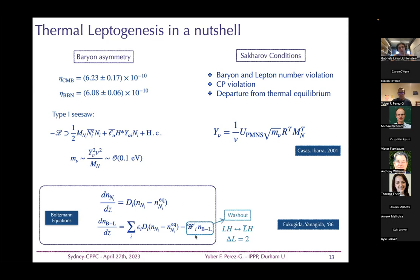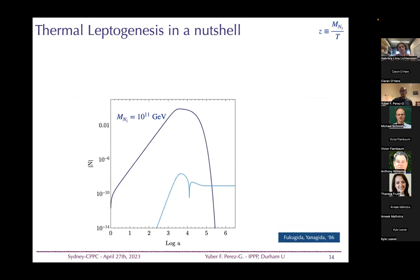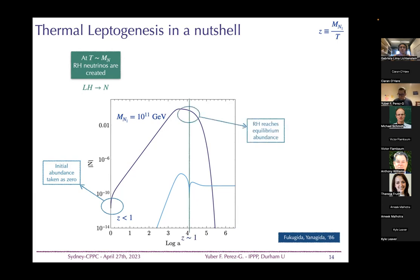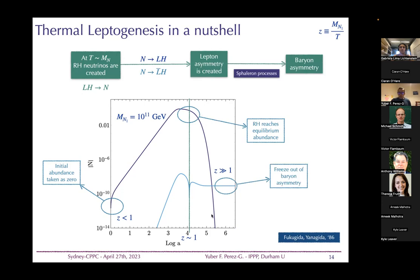In thermal leptogenesis, at temperatures of order the right-handed neutrino mass, these neutrinos are created via inverse processes; the abundance reaches equilibrium. The different CP-violating decays into leptons and anti-leptons create a lepton asymmetry, which is then transformed into a baryon asymmetry via sphaleron processes.